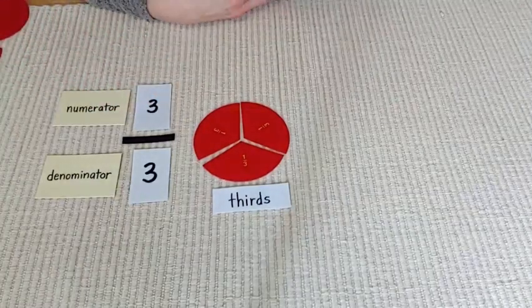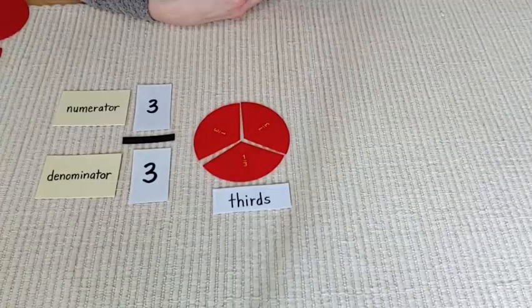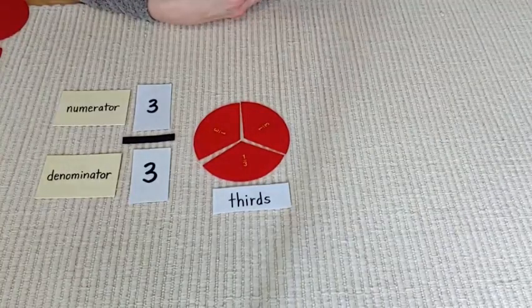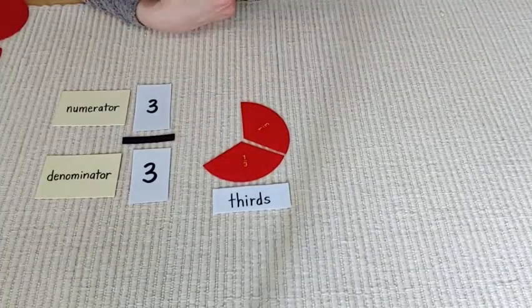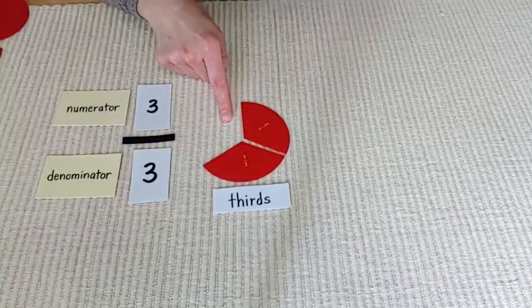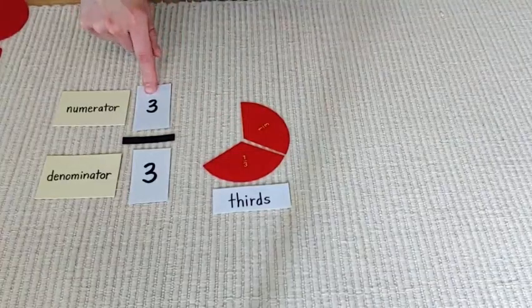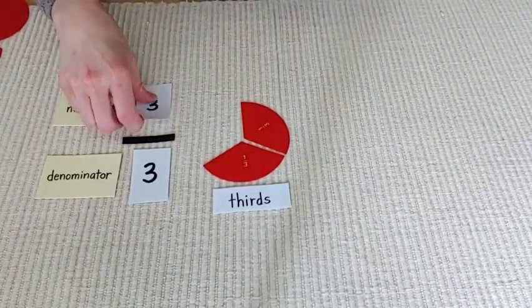But let's pretend one of the members is a cat and the cat ran up a tree. Meow. Meow, meow, meow. Oh no. Now I'm down a family member. There were three thirds, but one of them ran up a tree.